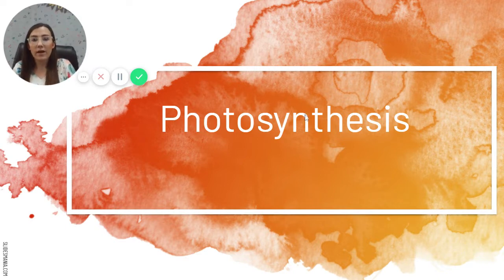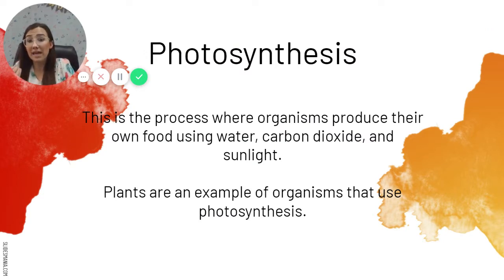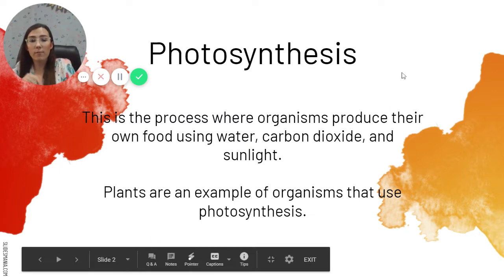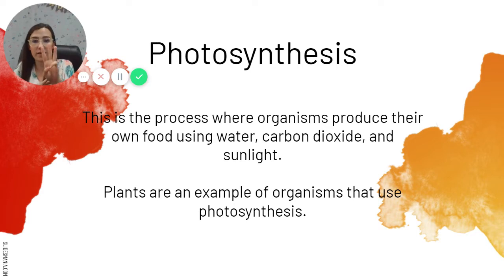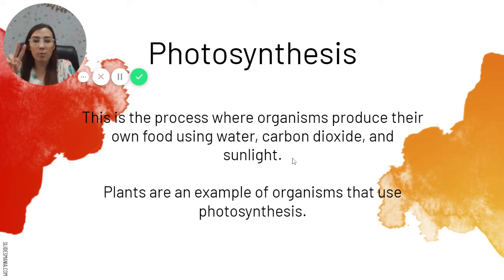So let's get started with photosynthesis. This is the process where organisms produce or make their own food using water, carbon dioxide, and sunlight. They do need all three things to make their own food. Plants are an example of these organisms, and that's what we'll be focusing on here in seventh grade. Plants use the process of photosynthesis to create their own food.